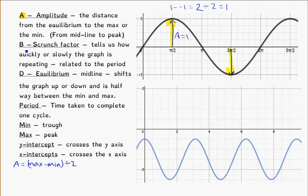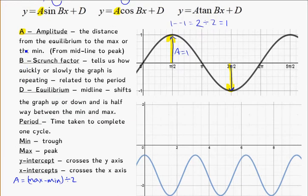So looking at what I call B, or the scrunch factor in the formula, this tells us how quickly the graph is going up and down, or repeating itself. So it's related to the period, which is going to be the time it takes to complete one of those cycles, to go from the equilibrium up, down, and back to the equilibrium again.